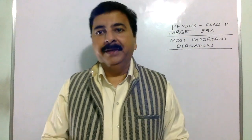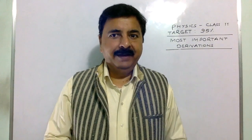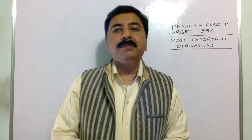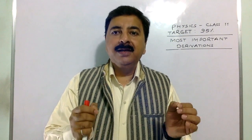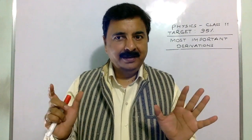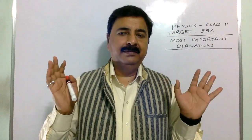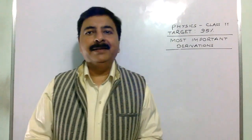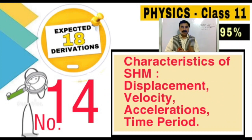Derivation number 14 is from the last chapters — oscillation and waves. It covers the characteristics of simple harmonic motion. Remember, simple harmonic motion is very important. Something will definitely come, and I expect that the derivation can come. Characteristics of SHM means displacement, velocity, acceleration, time period, etc.